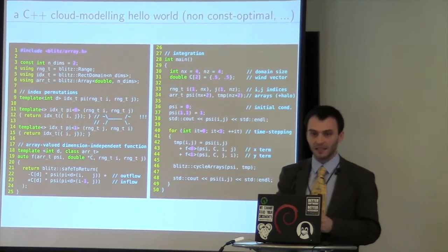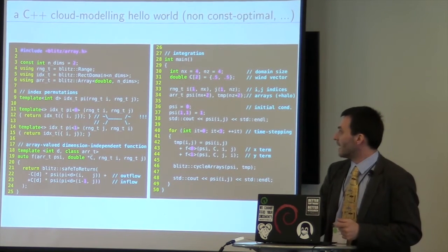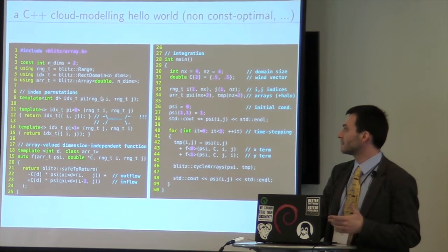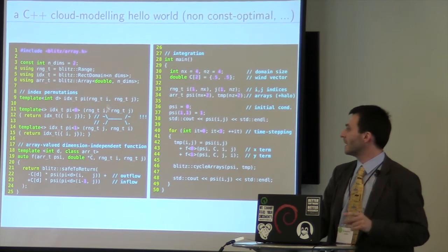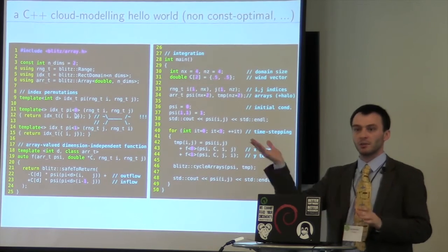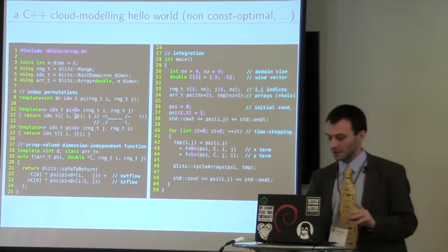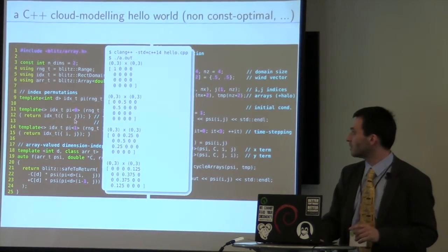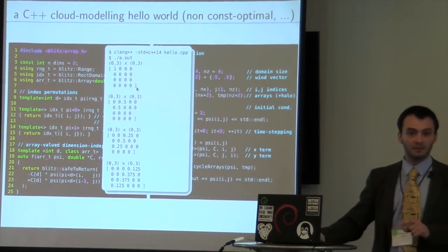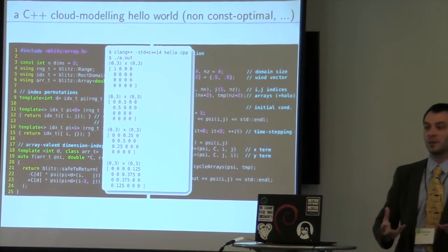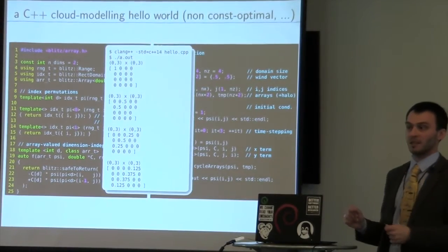So, the final thing is how to implement the permutation. A template that is specialized, this is template pi, takes two indices and simply permutes them depending on the template int argument. If I want zero dimension, one dimension. Not going into details. The whole program is here. The output is here. The cloud moves following the diagonal. So, this is a hello world. It was just to say, to explain what type of problems we are addressing at work. And why C++ might be used.